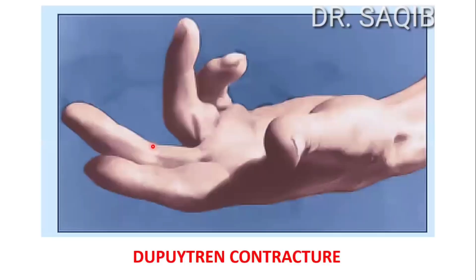As you can see here, this is the metacarpophalangeal joint and this is the first interphalangeal joint. These two are involved in flexion. And this joint, the distal interphalangeal joint, is not flexed — it is rather extended.